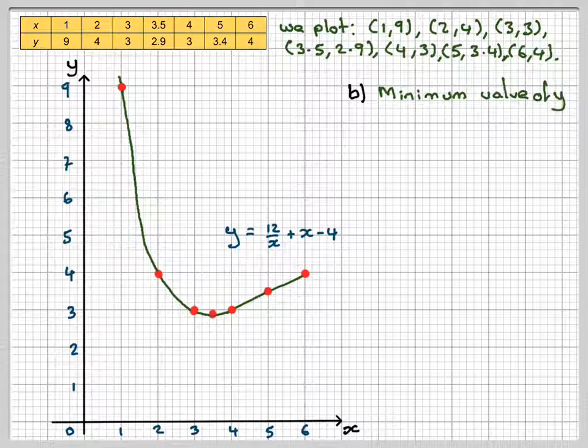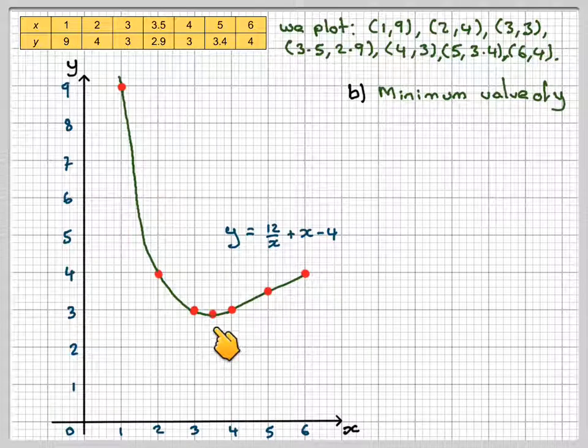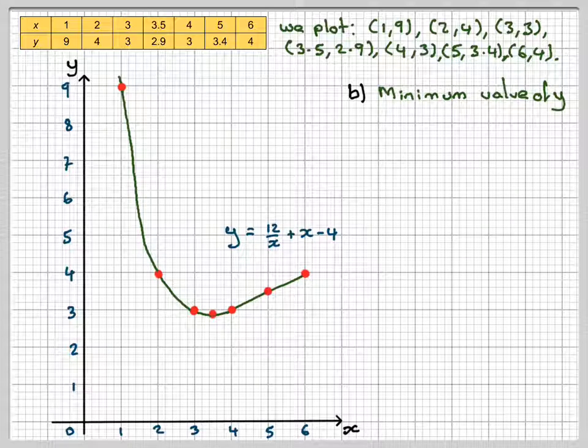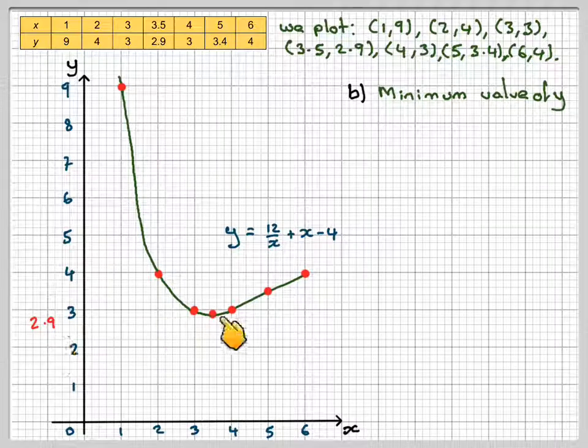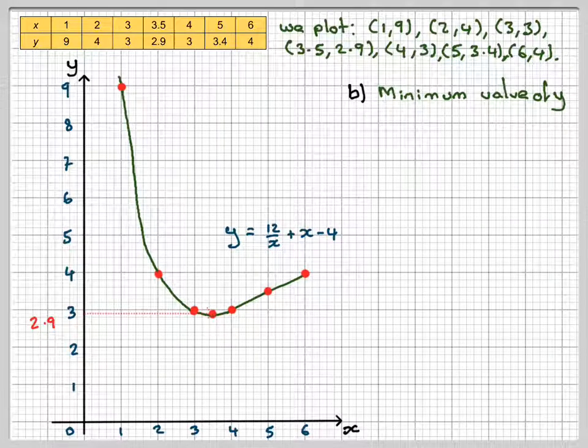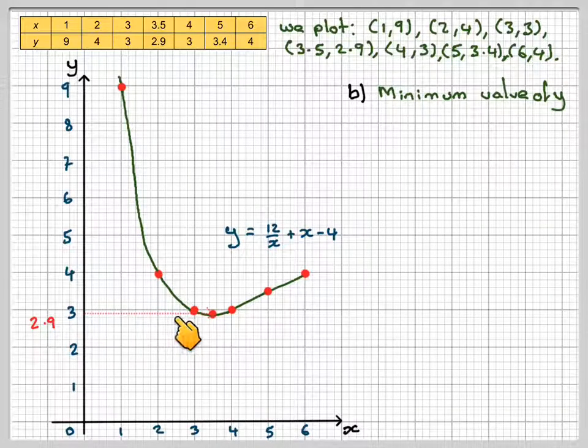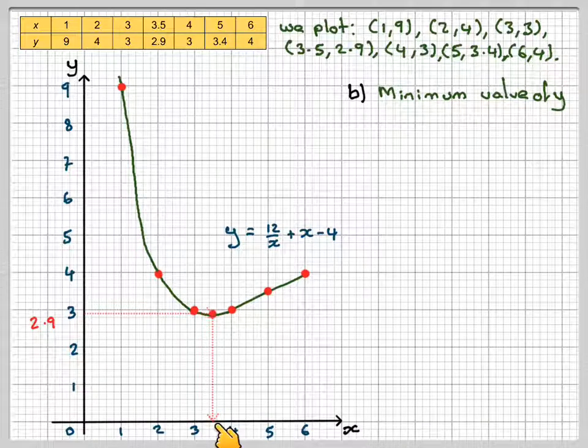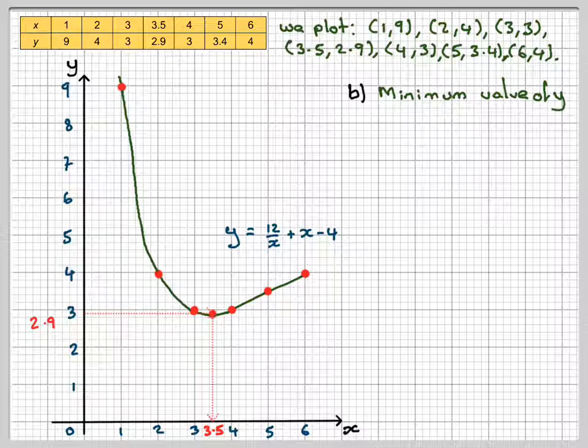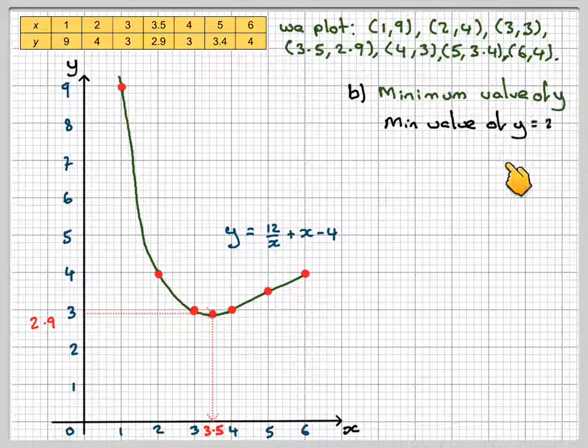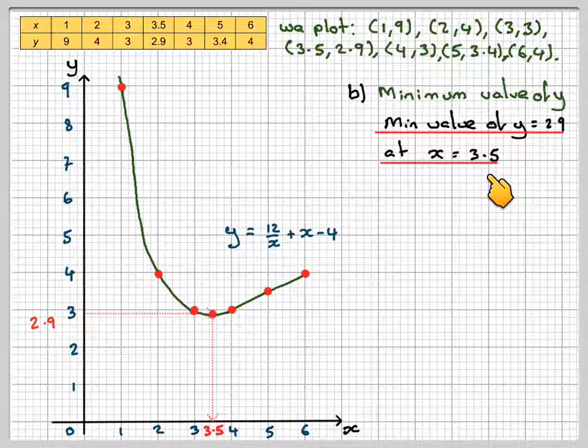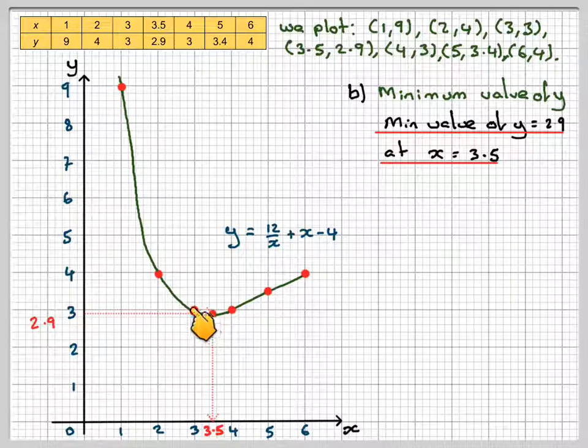In part b, we're now asked to find the minimum value of y. The minimum value of y occurs here, so you need to indicate on your graph how you've got the answer. You need to draw some dotted lines. That value there was 2.9. Drawing a line across here and then reading down to get the value of x, we can see it's 3.5. The minimum value of y is 2.9 at x = 3.5. It's the minimum because it's the bottom point of the curve.